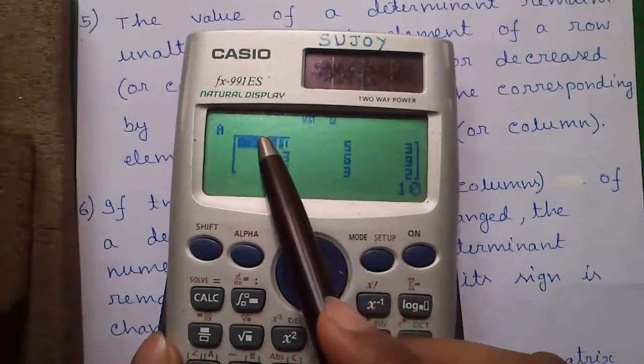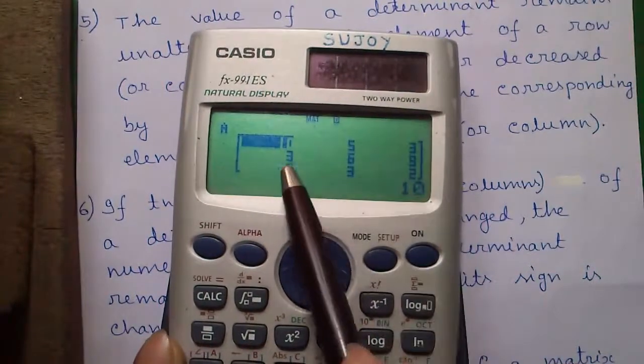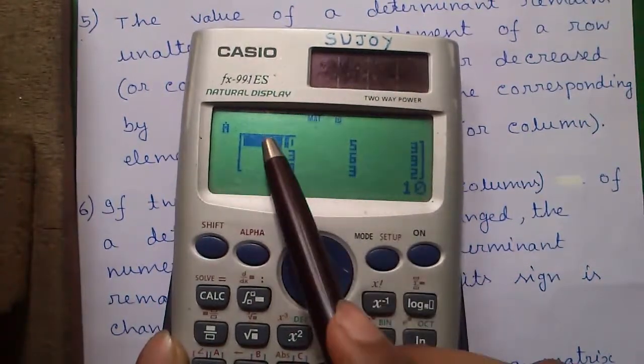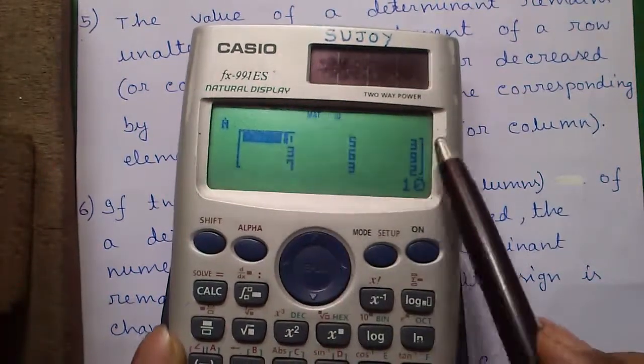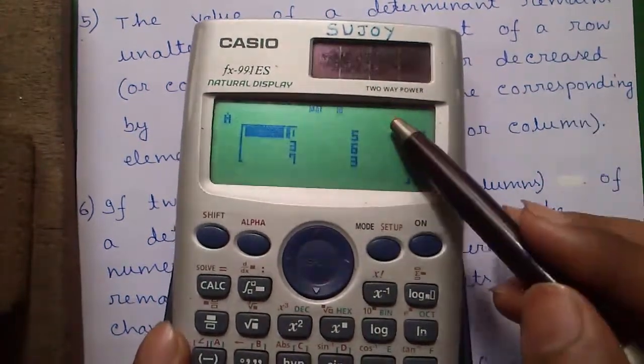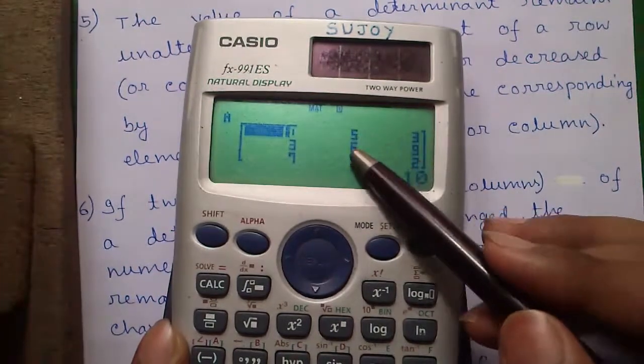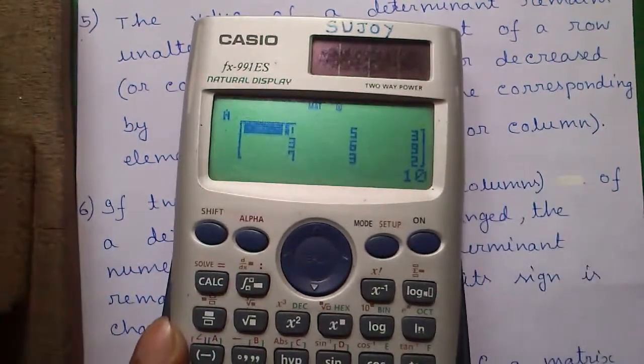So that means if we subtract sum of row 2 and row 3 from row 1, the value of determinant will be unchanged. Similarly, the property applies for columns also, for any row or any column.